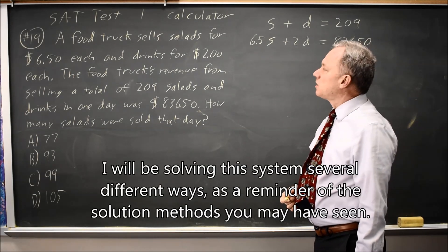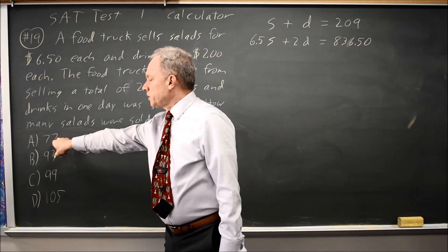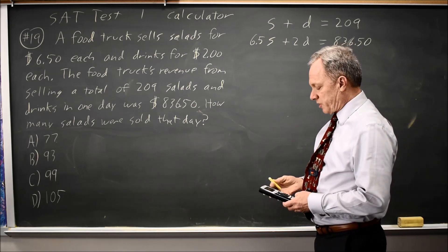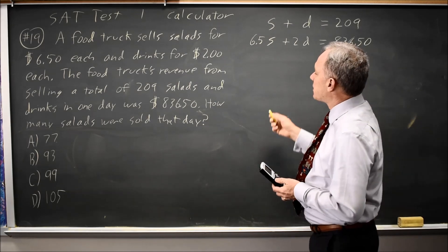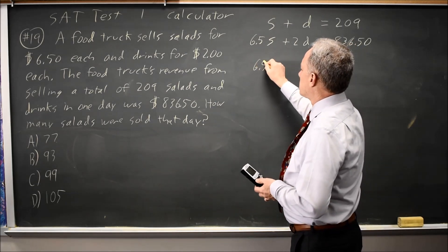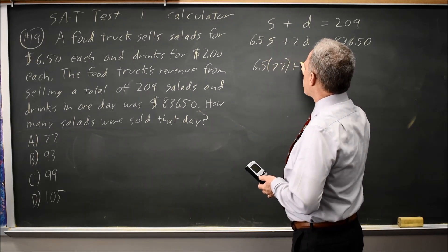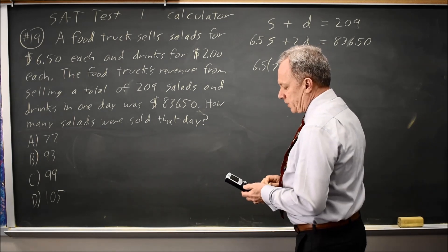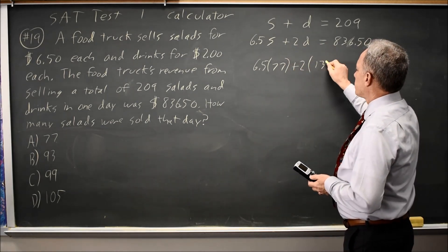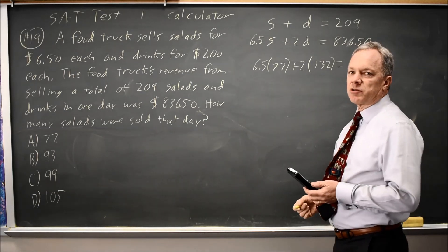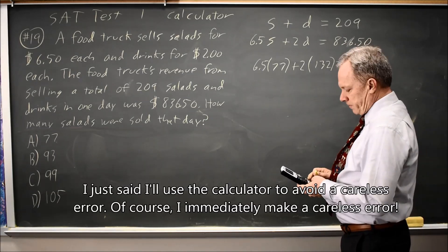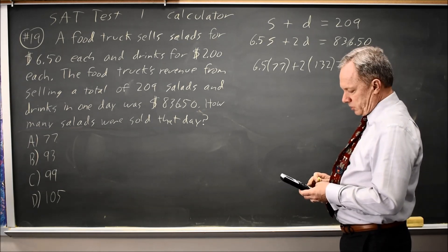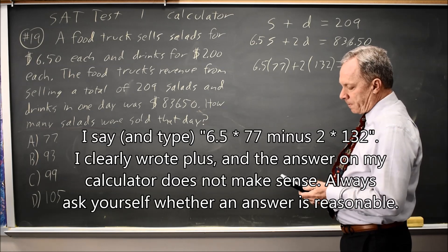The easiest way to solve this system is to substitute in the answer choices they gave you in the second equation to see which one gives you the correct amount of revenue. So if I sold 77 salads, that's S equals 77. The number of drinks is 209 minus 77, and that's 132. And I would definitely do this arithmetic on the calculator to avoid a careless error. And then I have 6.5 times 77 minus 2 times 132.